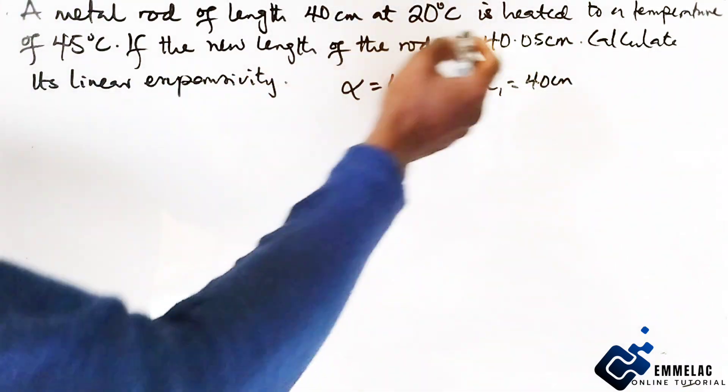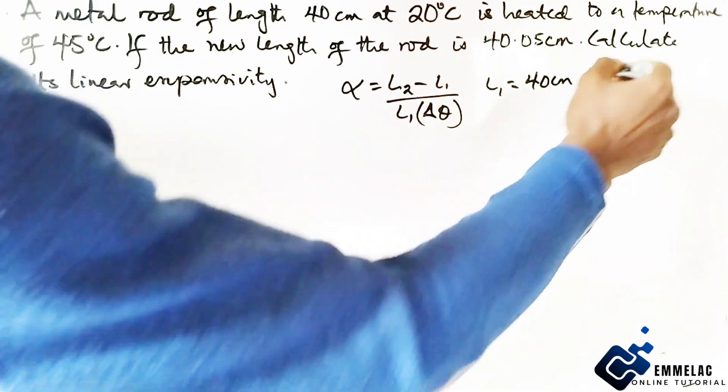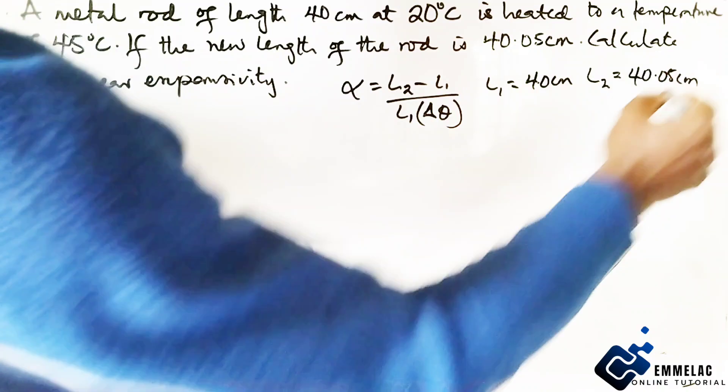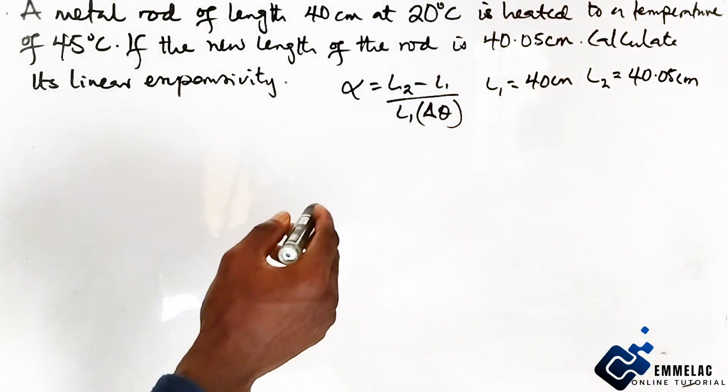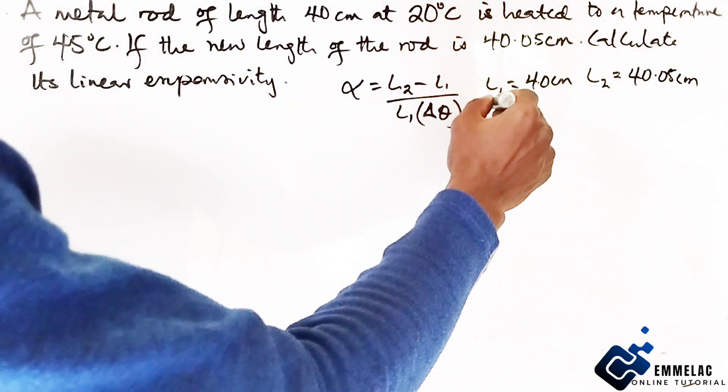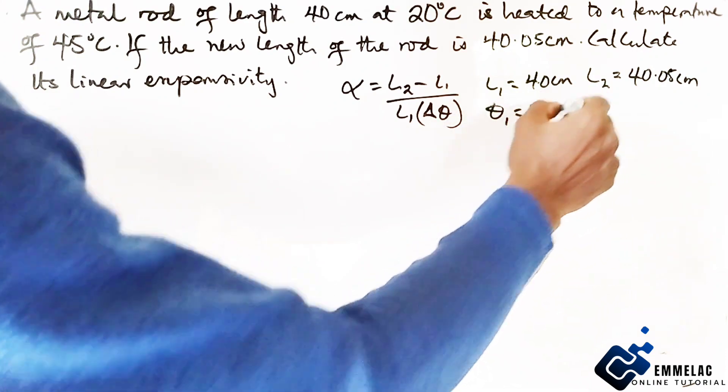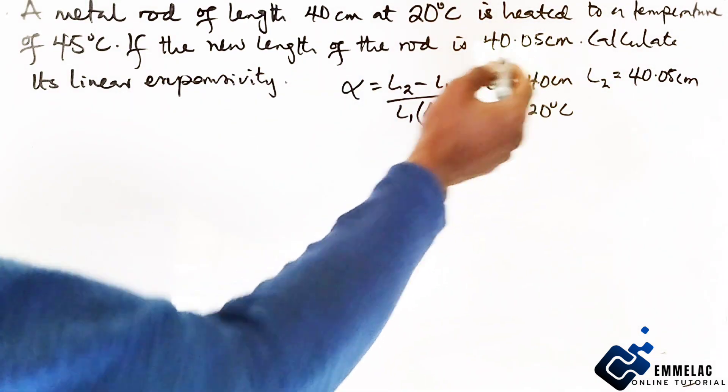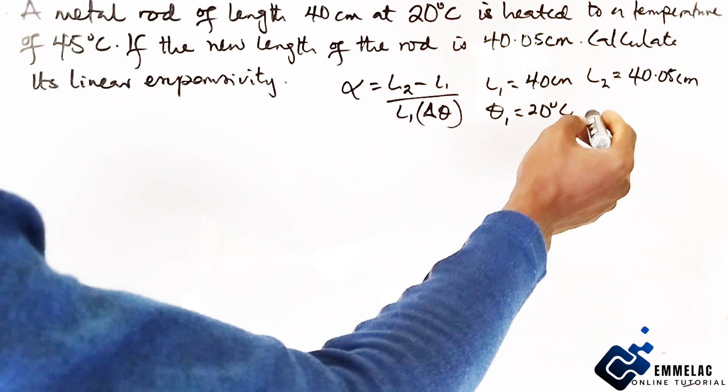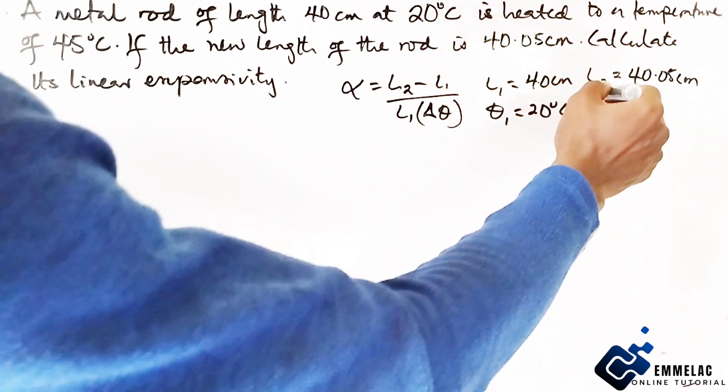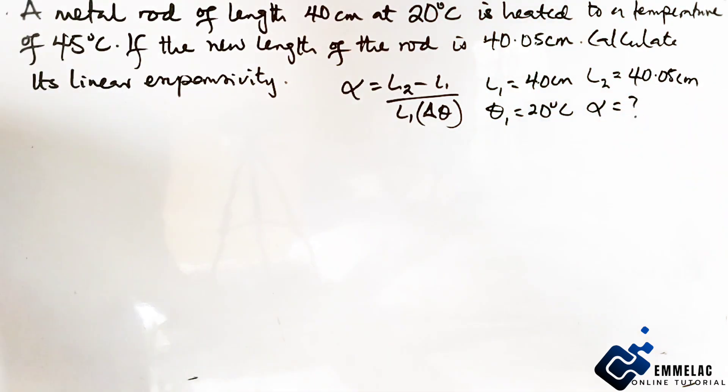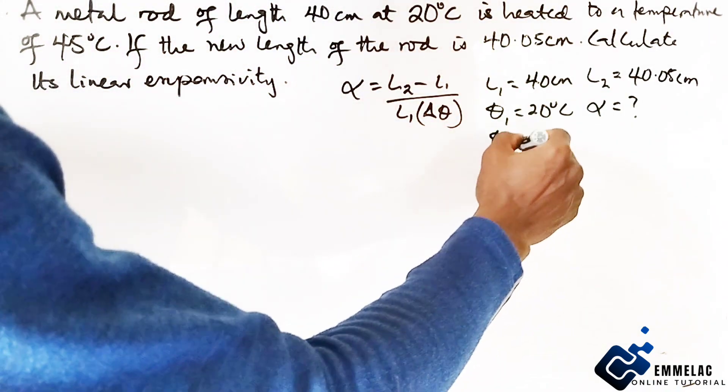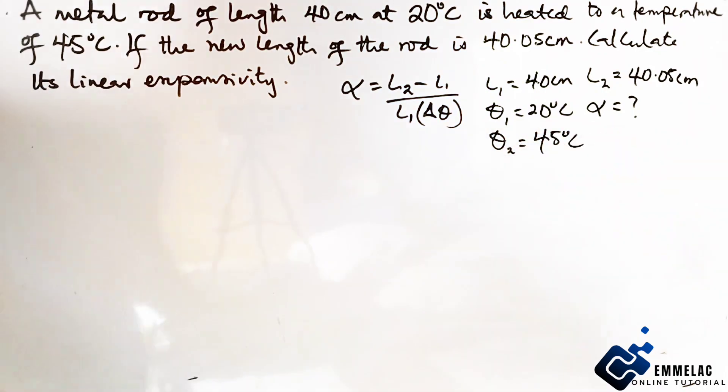Now the final length here is giving us 40.05 cm. The initial temperature is giving us 20 degrees centigrade and we are asked to calculate the linear expansivity. The final temperature here is 45 degrees centigrade.